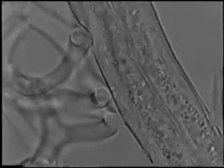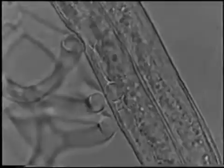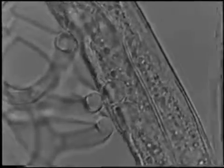The infection tubes penetrate the cuticle of the living prey and swell to form infection bulbs before destruction of the internal organization of the nematode occurs.